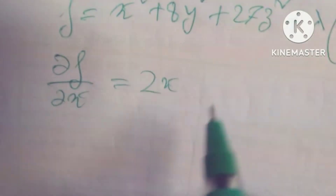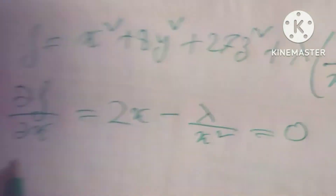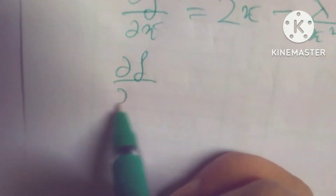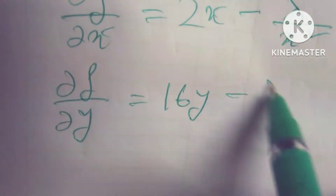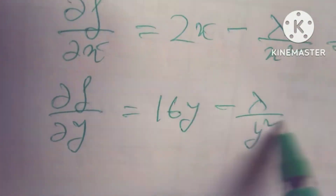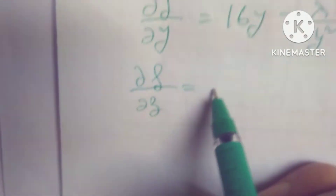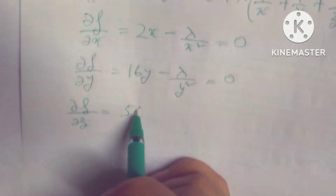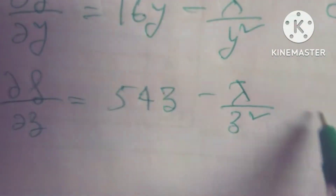Taking partial derivatives: del f by del x equals 2x minus lambda divided by x squared equals 0. Del f by del y equals 16y minus lambda divided by y squared equals 0. Del f by del z equals 54z minus lambda divided by z squared equals 0.